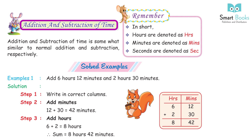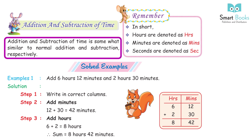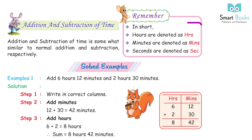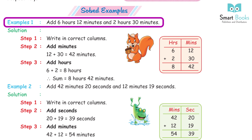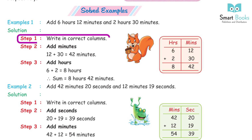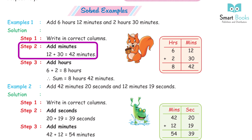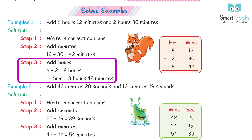Addition and Subtraction of Time: Addition and subtraction of time is similar to normal addition and subtraction. Hours are denoted as HRS, minutes as MIN, and seconds as SEC. Example 1: Add 6 hours 12 minutes and 12 hours 30 minutes. Step 1: Write in correct columns. Step 2: Add minutes — 12 + 30 = 42 minutes. Step 3: Add hours — 6 + 2 = 8 hours. Sum = 8 hours 42 minutes.